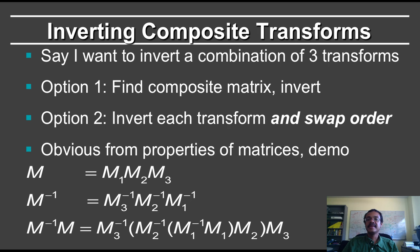I'm going to write M inverse times the original matrix M. So the original matrix is given by M1, M2, and M3.